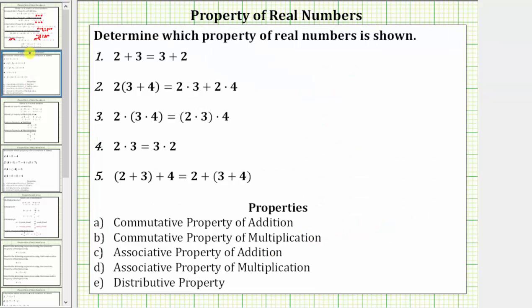Going back to our examples: number one, we have two plus three equals three plus two. Here, we are changing the order of the addition, which is the commutative property of addition, which is answer a. Next, we have two times the quantity three plus four equals two times three plus two times four, which is the distributive property — we distribute the two, giving us two times three plus two times four. The distributive property is e.